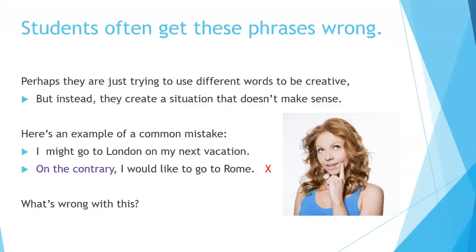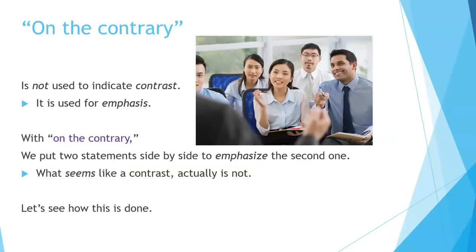Students often get these phrases wrong — perhaps they're just trying to use different words to be creative, but instead they create a situation that doesn't make sense. Here's an example of a common mistake: 'I might go to London on my next vacation. On the contrary, I would like to go to Rome.' This is incorrect.